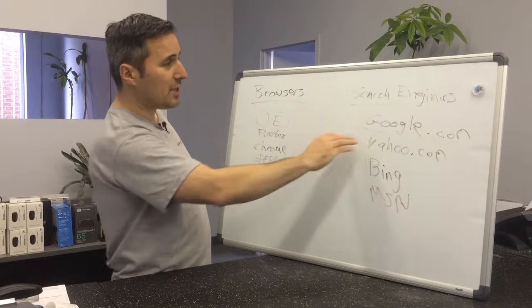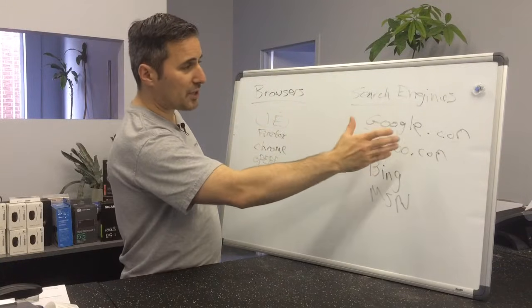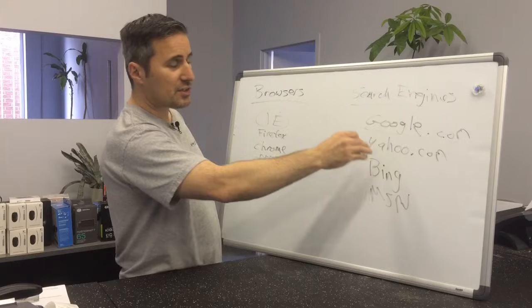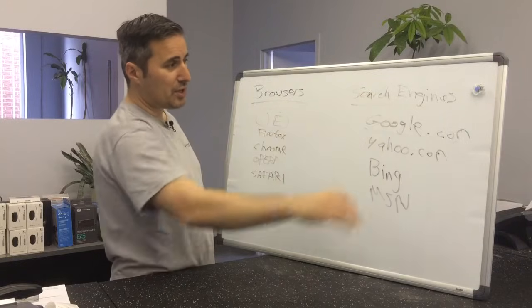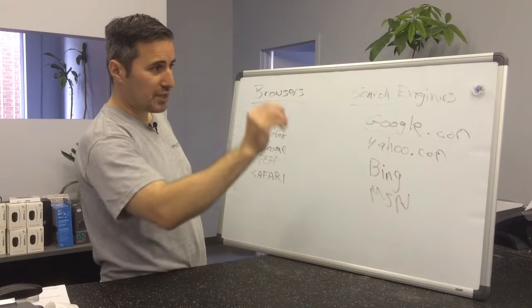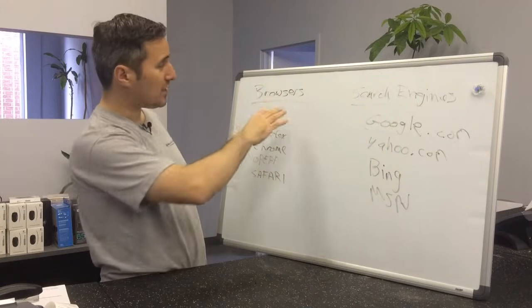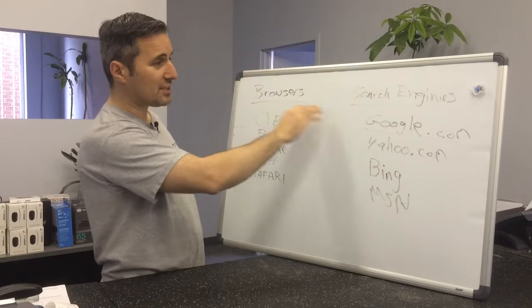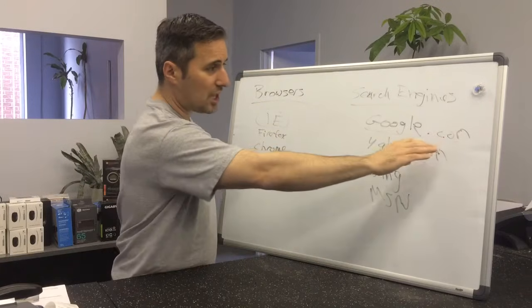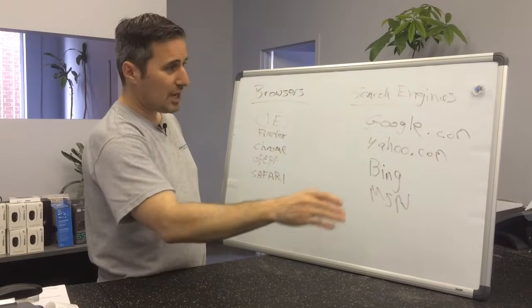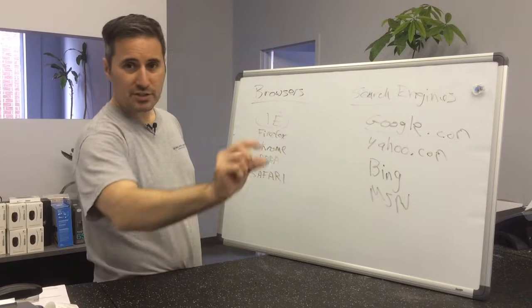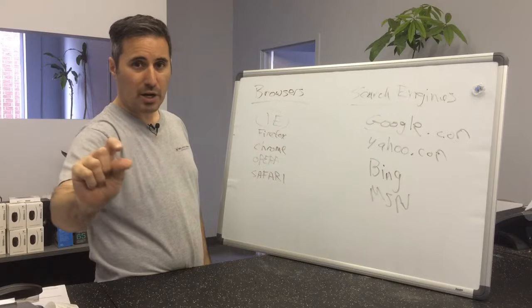Once your browser is open, then you can choose where you want to go. In the search engine, you're going to have to go to the address bar at the top of the browser and type in Google.com — then it'll take you to the search engine, and then you can search in the search bar.